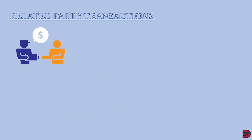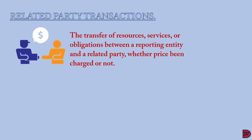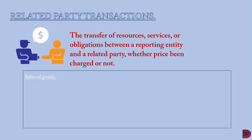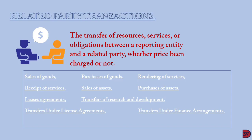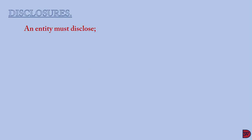A related party transaction is the transfer of resources, services, or obligations between a reporting entity and its related party, whether or not a price is charged. Examples include: sale of goods from one entity to its related party, purchasing of goods, rendering of services, receipts of services, sale of assets, purchasing of assets, lease agreements, transfer of research and development between related parties, transfer of license agreements, transfer of finance agreements such as loans, and provision of guarantees or collateral.